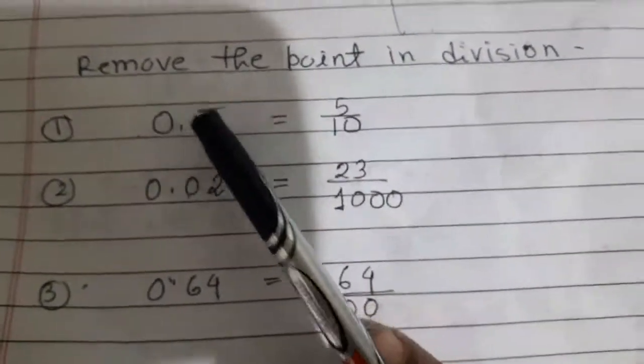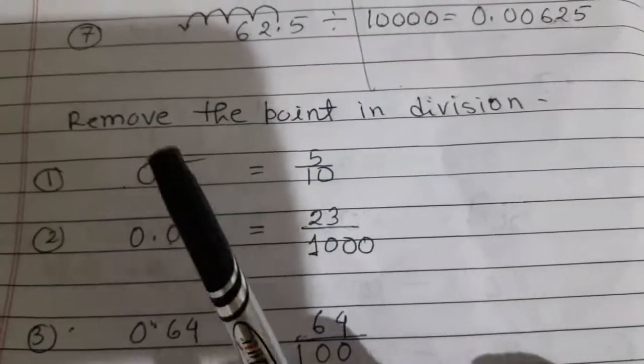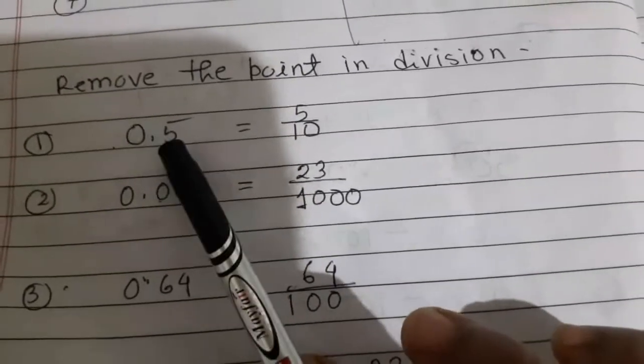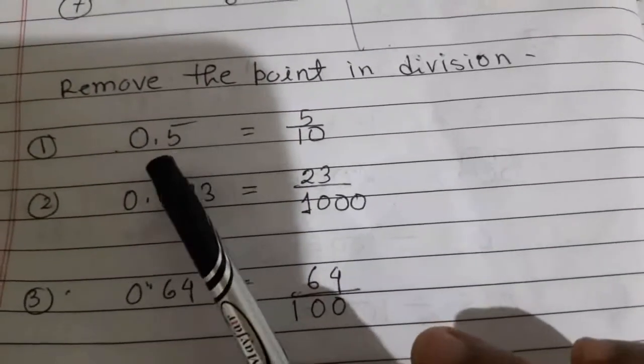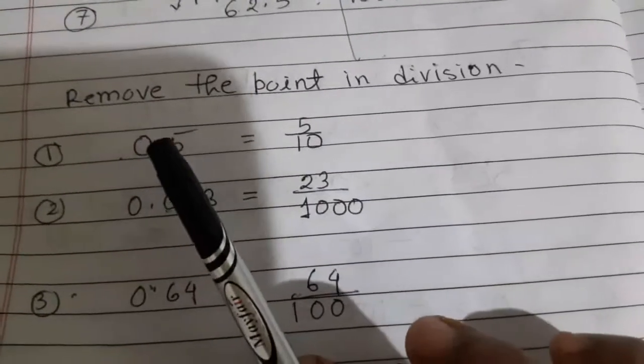Already we learned how to put the point. Now we learn how to remove the point. Because this point gets confusion in multiplication and division. In multiplication, point is removed from our mind.